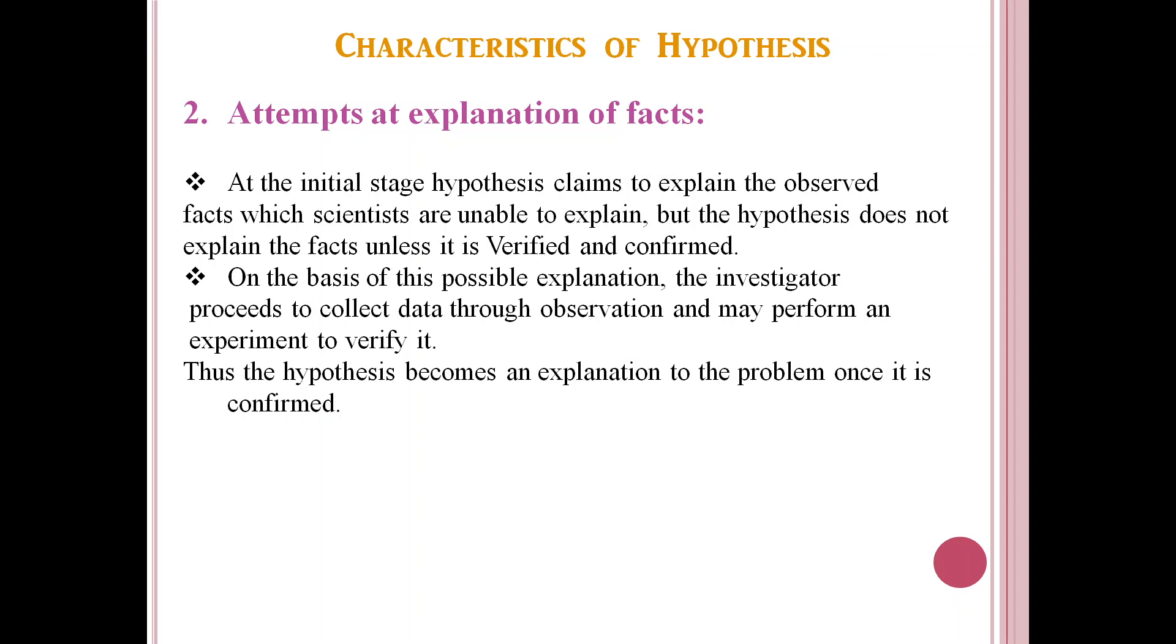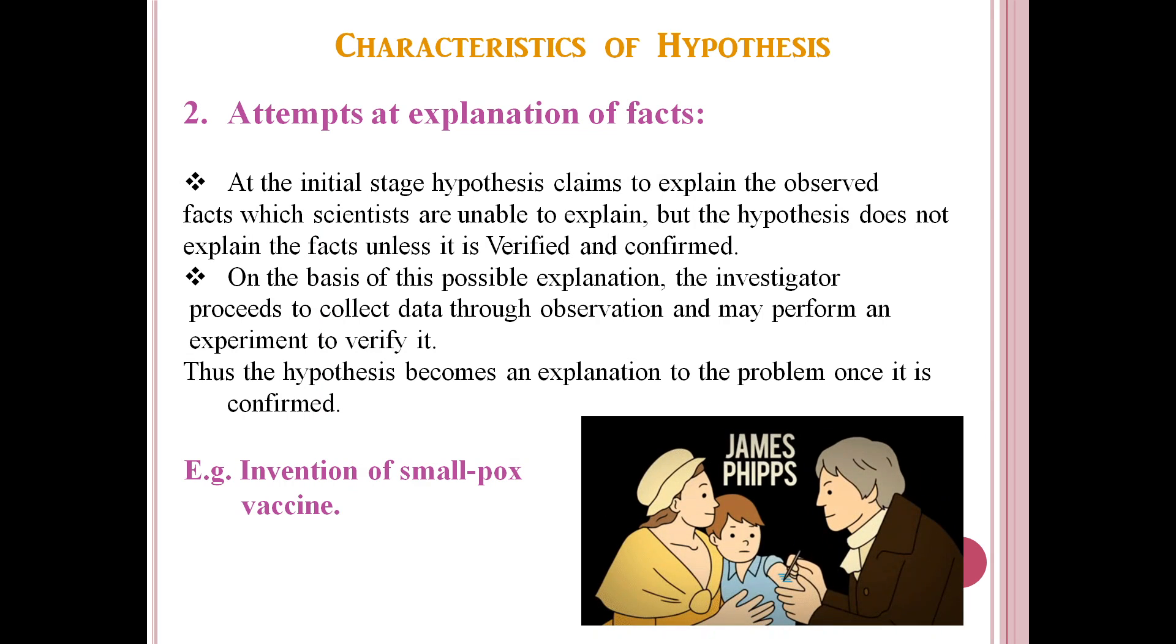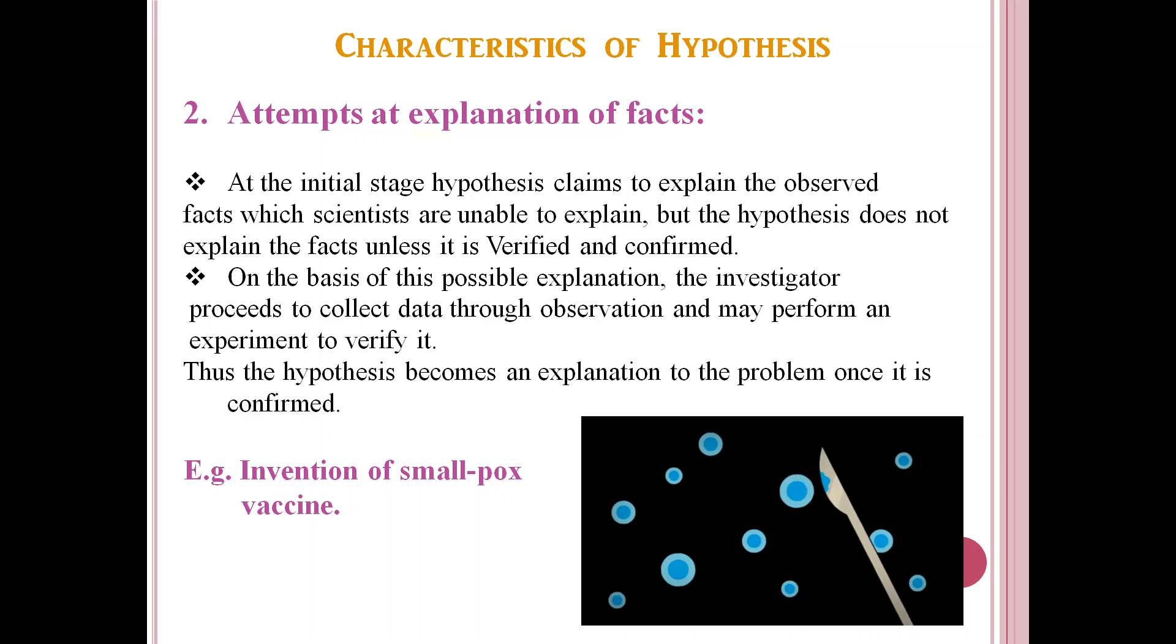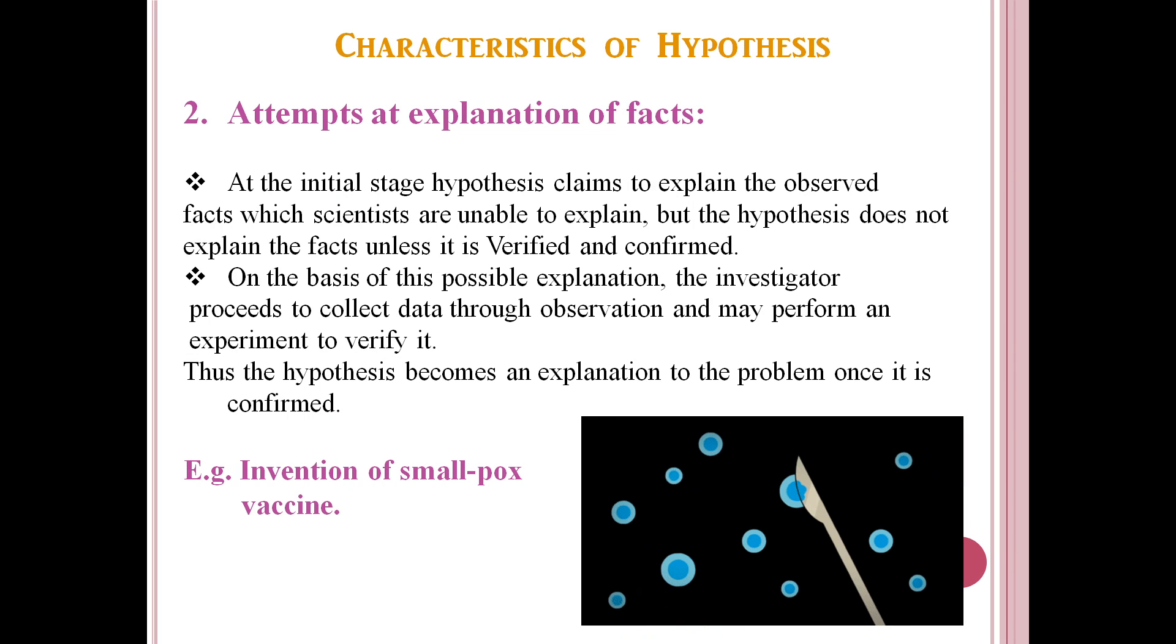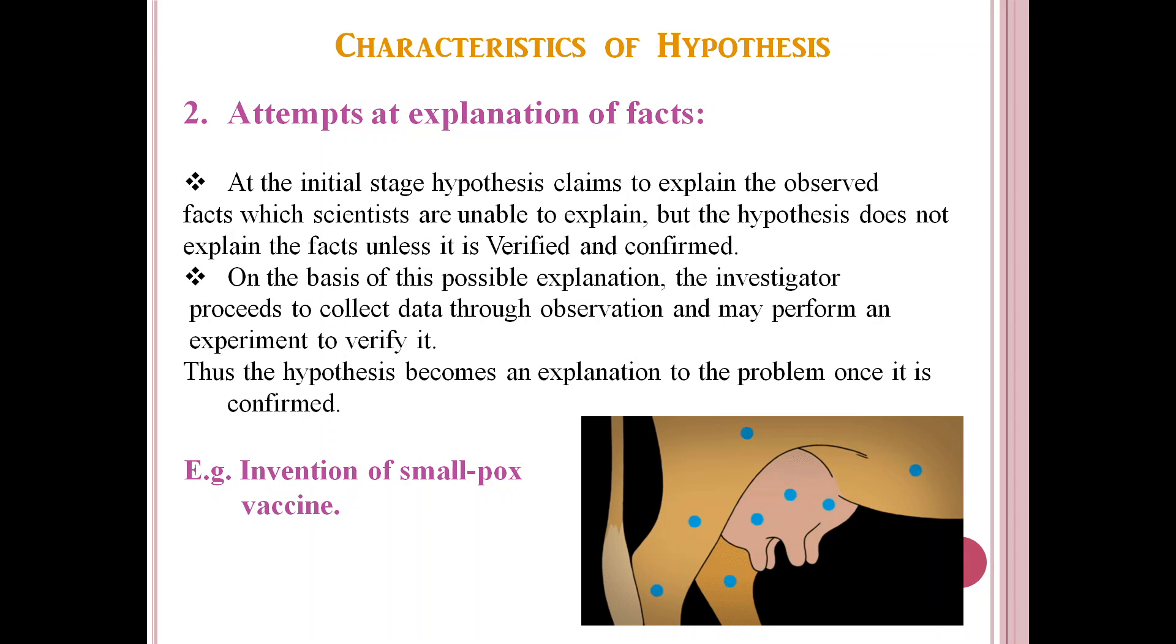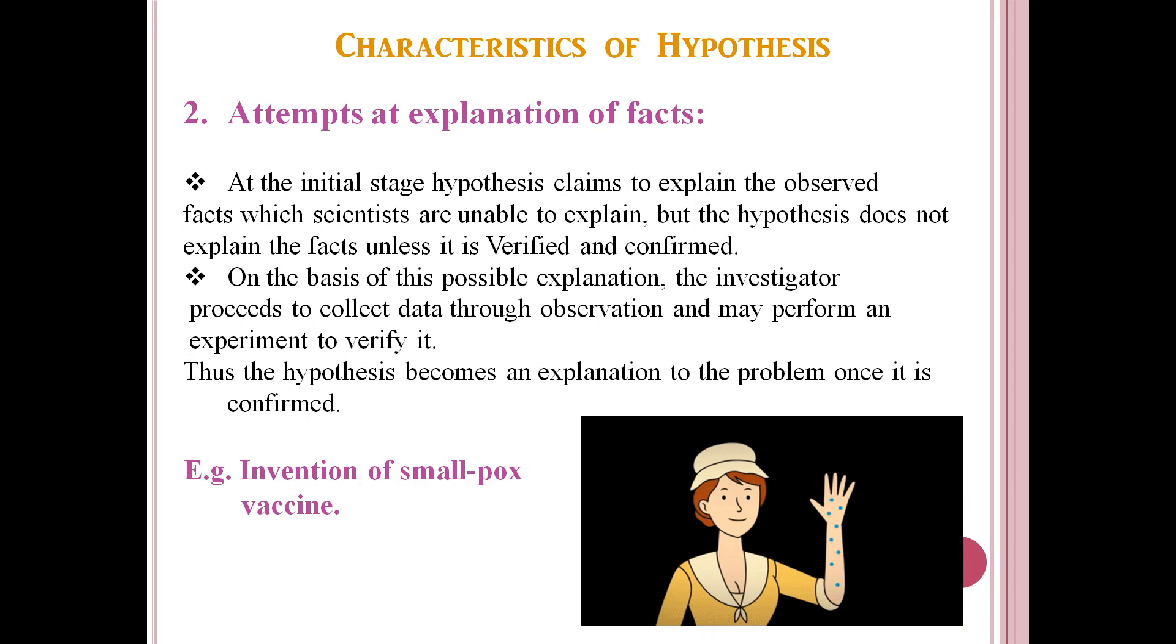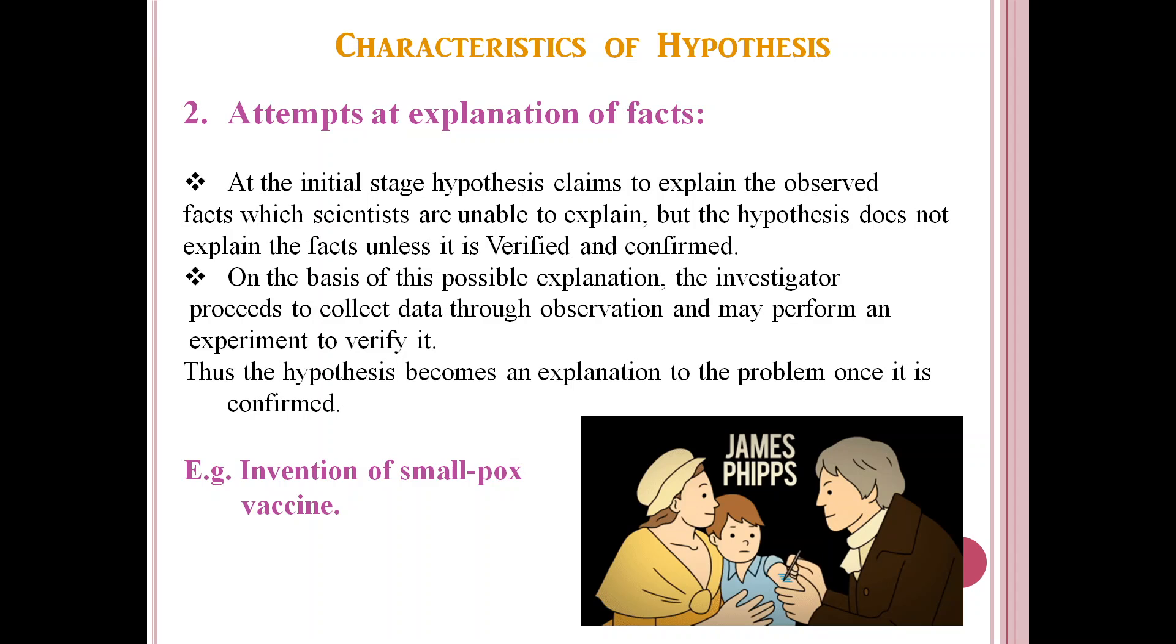Now, let us see how smallpox vaccine was invented by Edward Jenner. Since childhood, Edward Jenner had seen that all villagers were suffering from smallpox, but he had heard that the milkmaids were getting cowpox. They had blisters on their hands, but did not develop smallpox. Now, the problem was how is that the milkmaids did not develop smallpox, though they were staying in the same village. To solve this problem, Edward Jenner gave a possible explanation that the pus in the blisters might have protected the milkmaid from getting smallpox. But this was just an attempt made and not the final solution. It had to be tested.